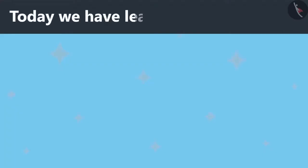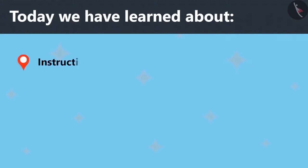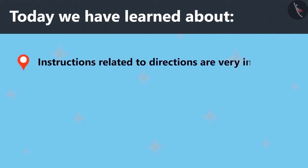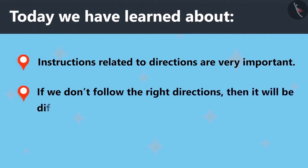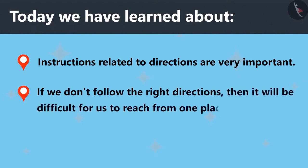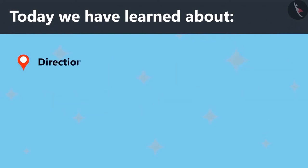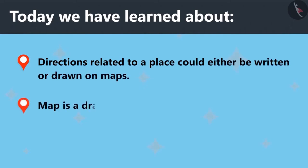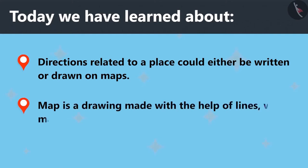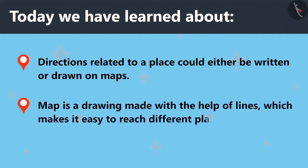Today we have learned about instructions related to directions are very important. If we don't follow the right directions, then it will be difficult for us to reach from one place to another. Directions related to a place could either be written or drawn on maps. A map is a drawing made with the help of lines which makes it easy to reach different places.